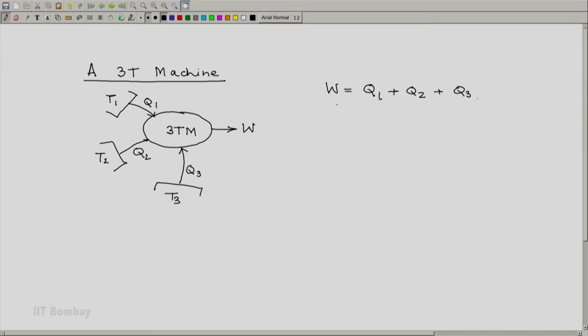Now, what does the Clausius inequality say? If we extend the boundaries of the machine to the three reservoirs, then for this extended system, the Clausius inequality would be Q1/T1 plus Q2/T2 plus Q3/T3 less than or equal to zero. This is what we want to prove.